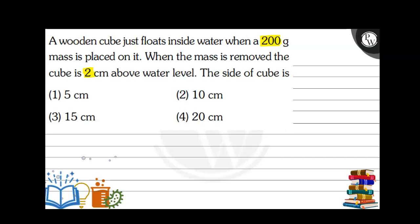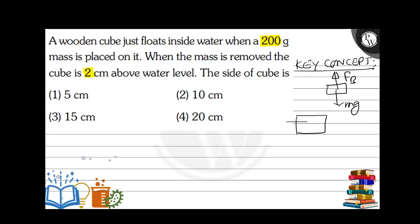The basic key concept involved here is: when an object is floating, the net force on it is zero. The downward force is mg and the upward force is the buoyant force, so net force must be zero. In our case, when the 200 g mass is not added, the object remains 2 cm above the water level.